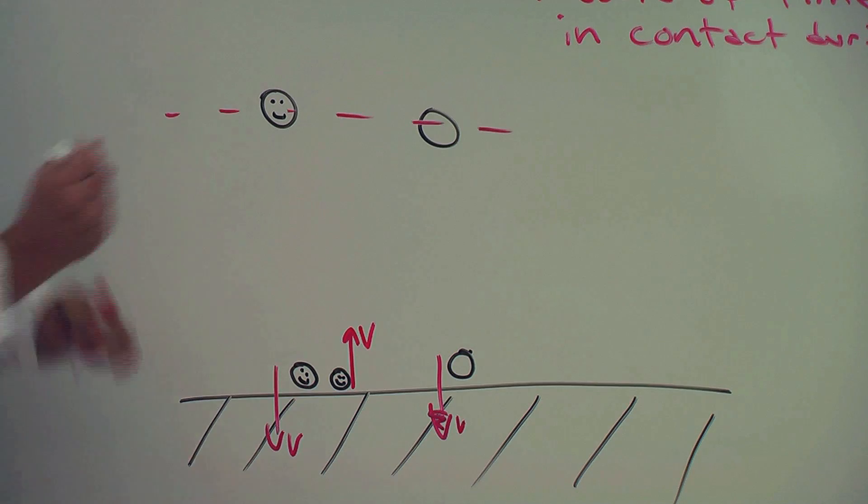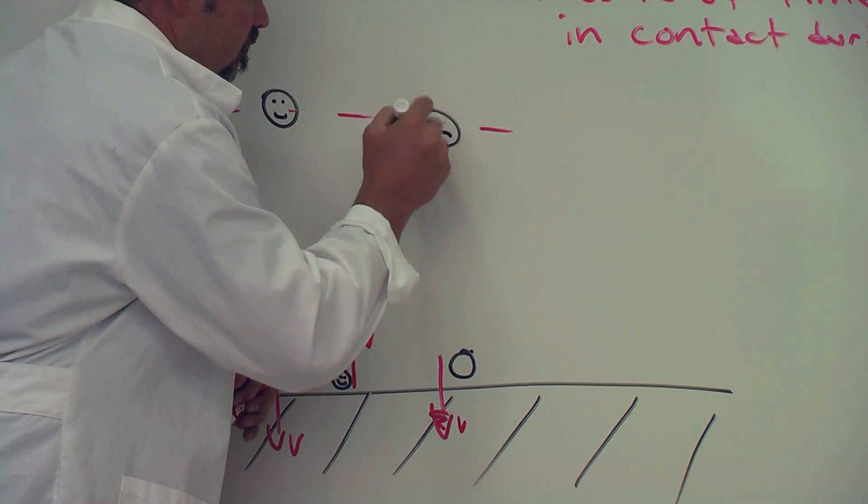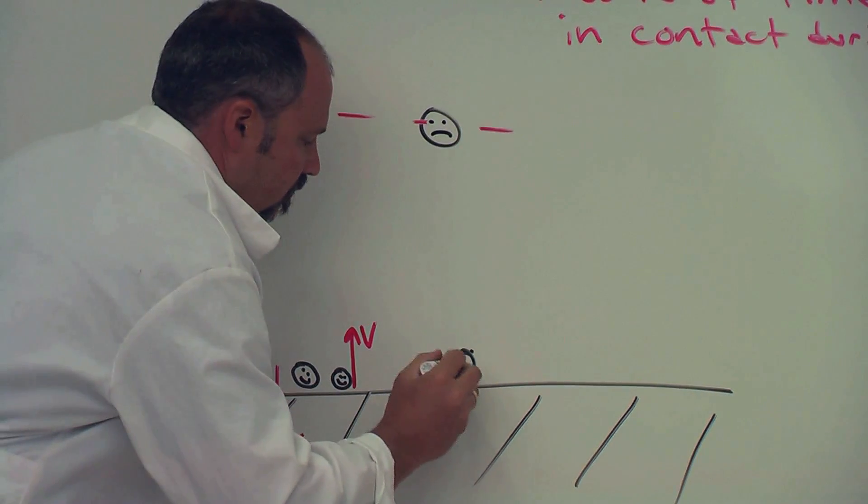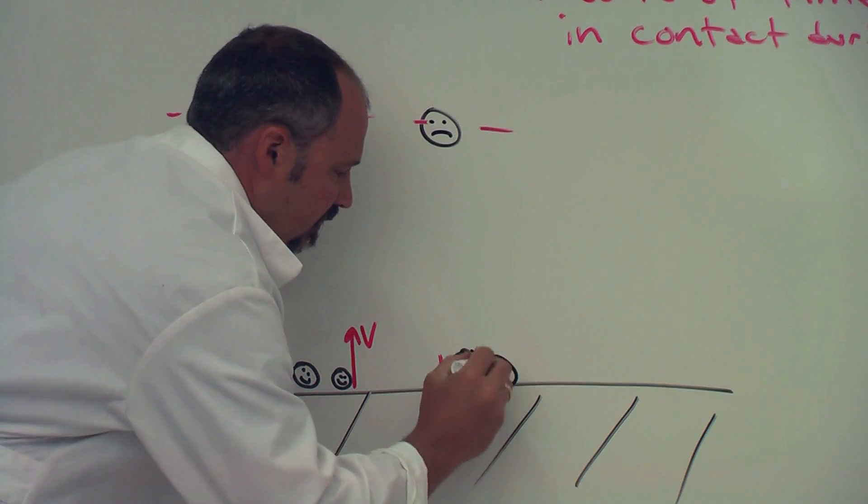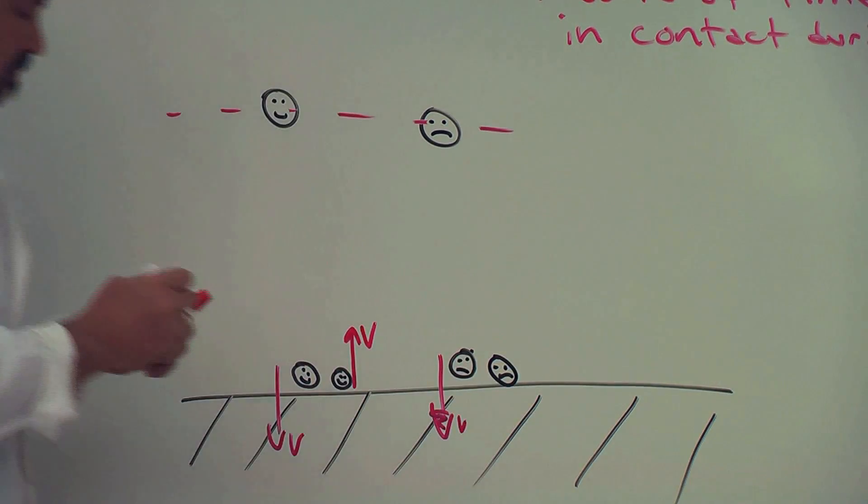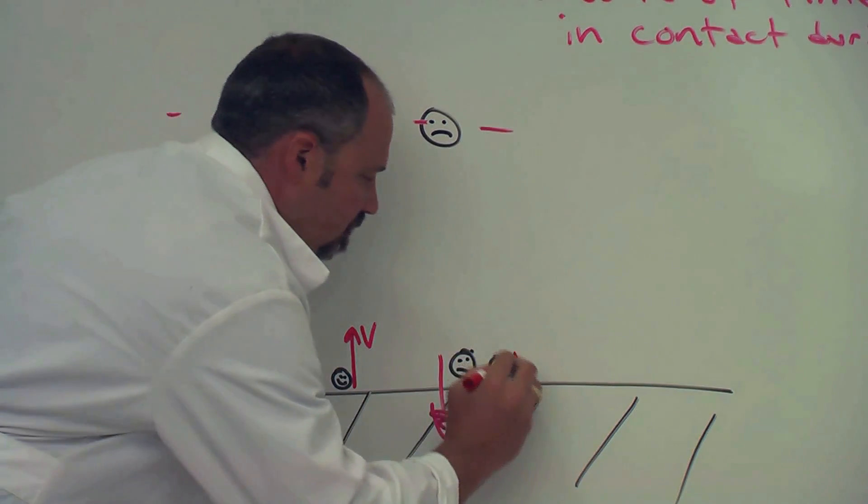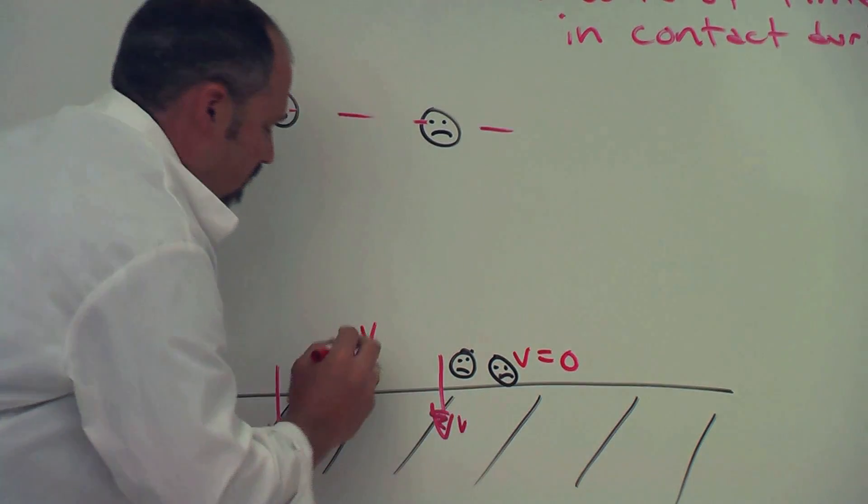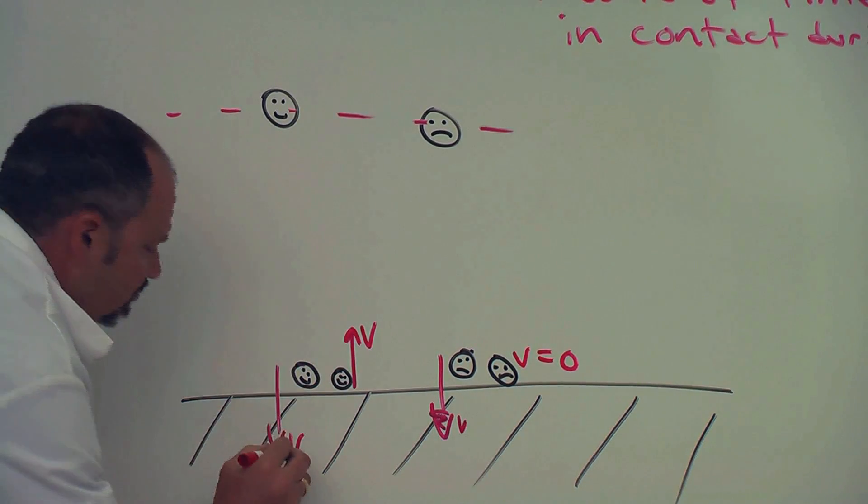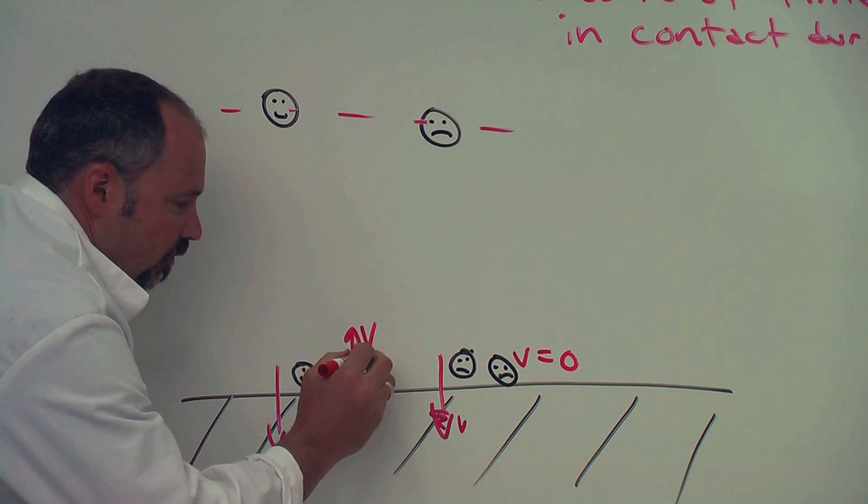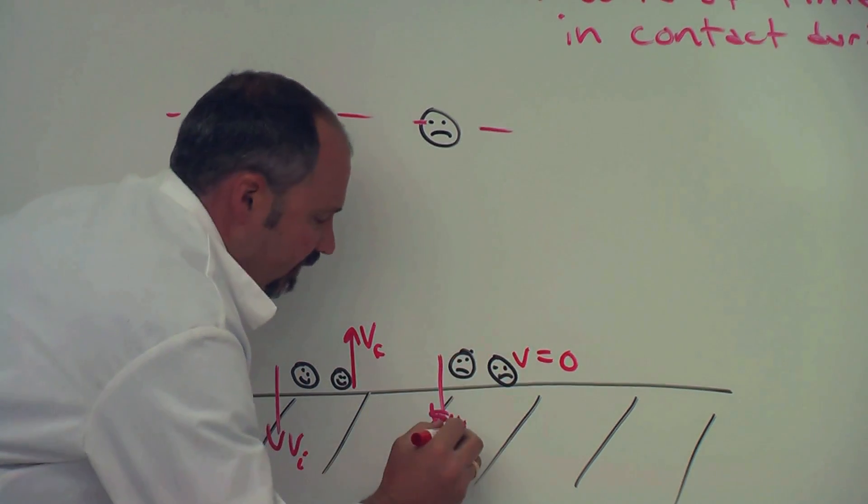The sad ball, however, as we know, immediately after just sits here. So after its speed is zero. So we'll call these the initial speed right before the collision, the final speed right after.